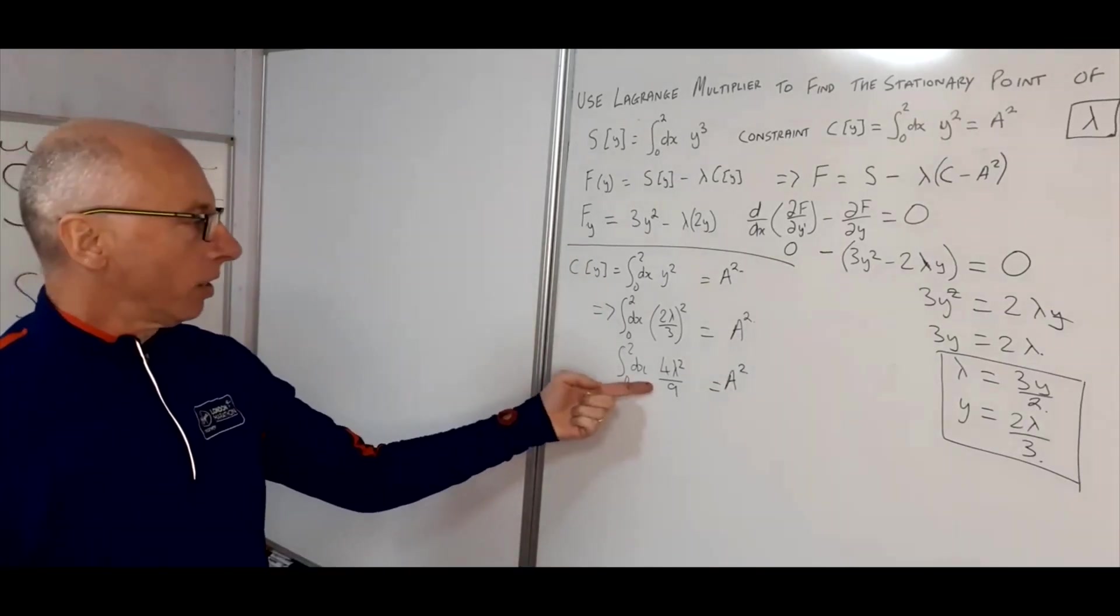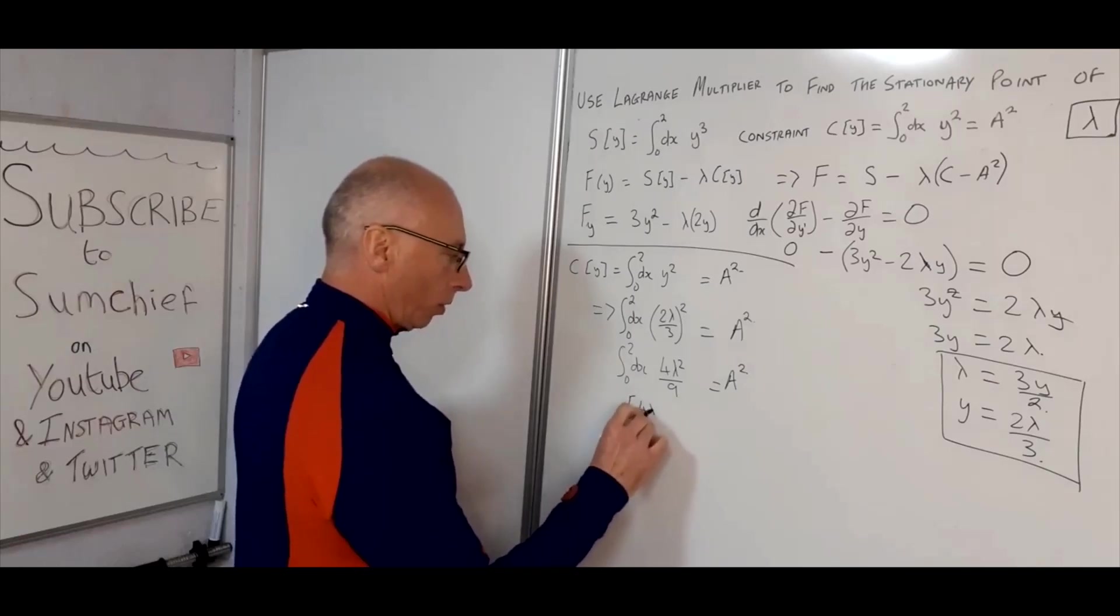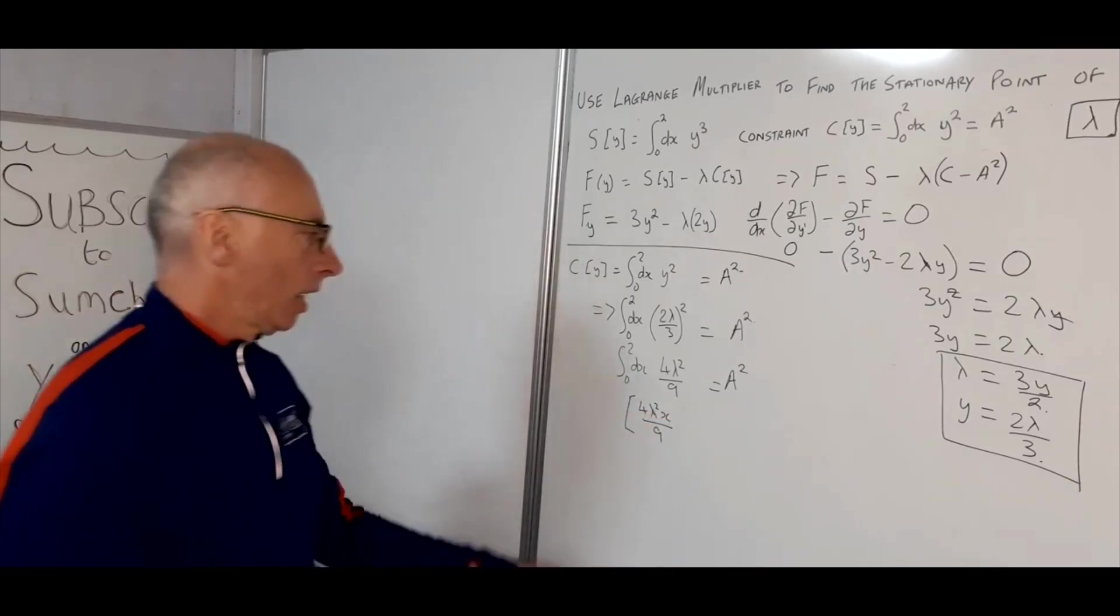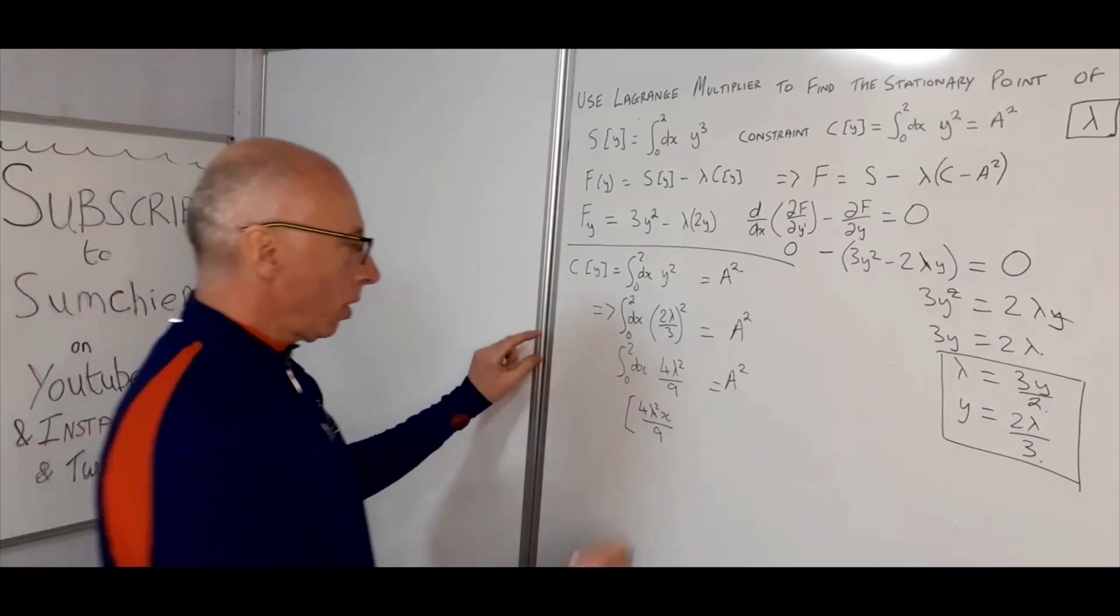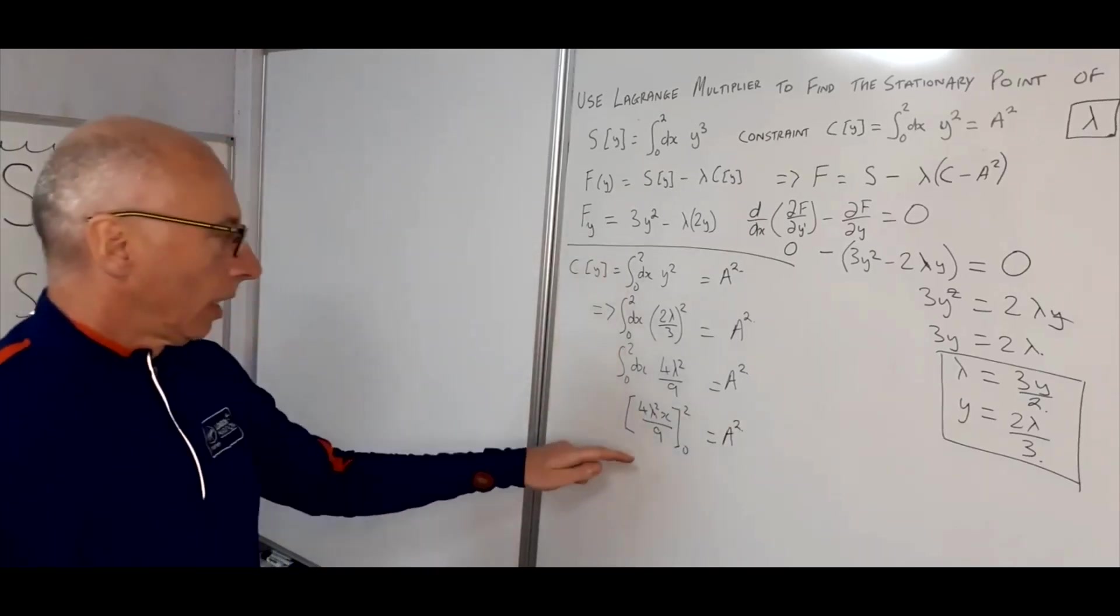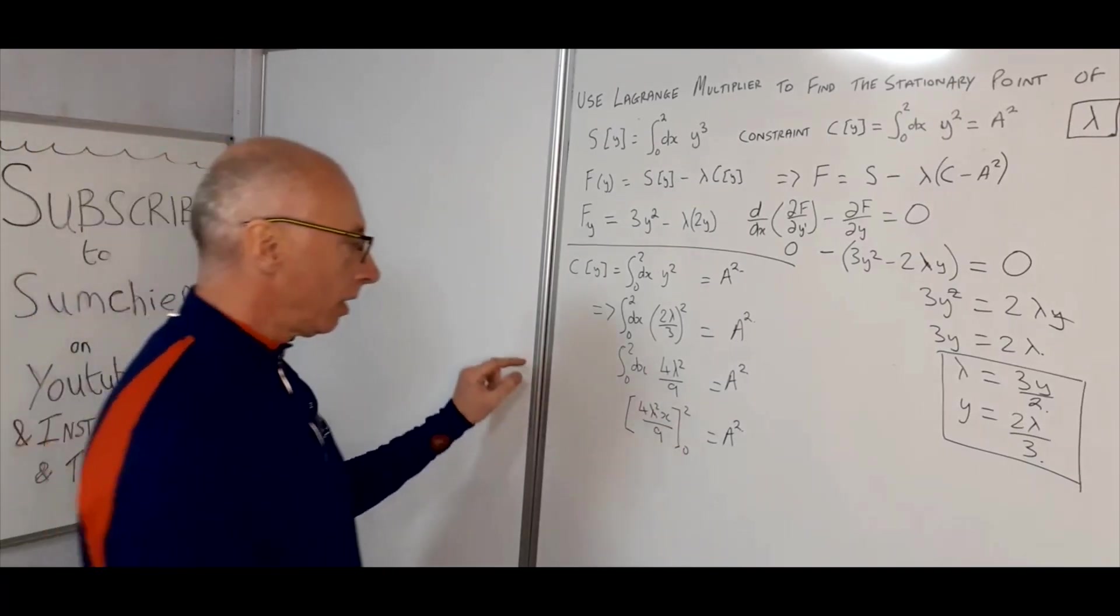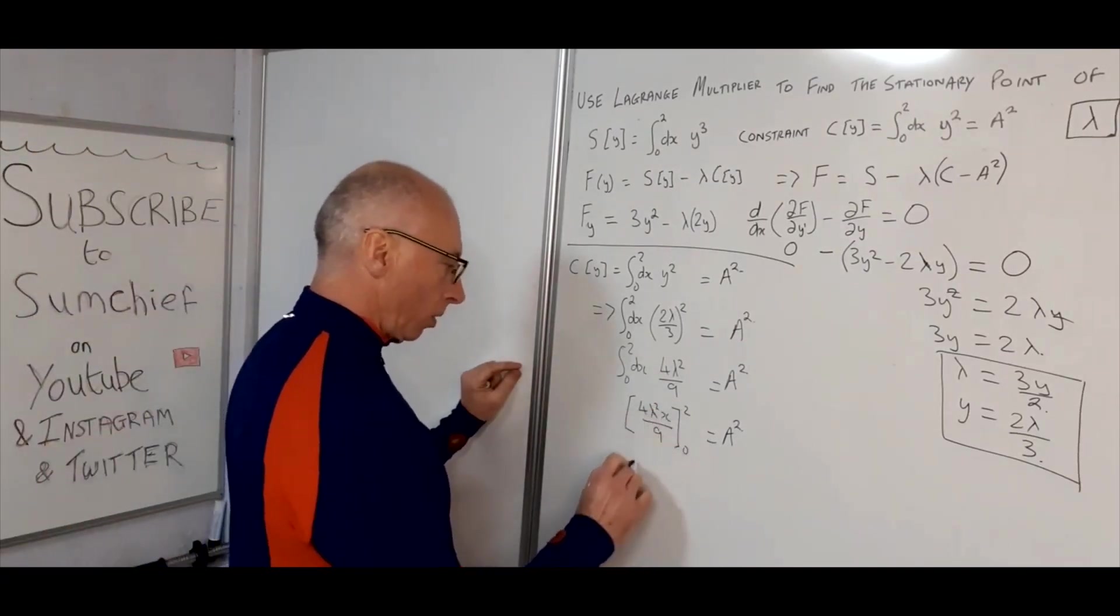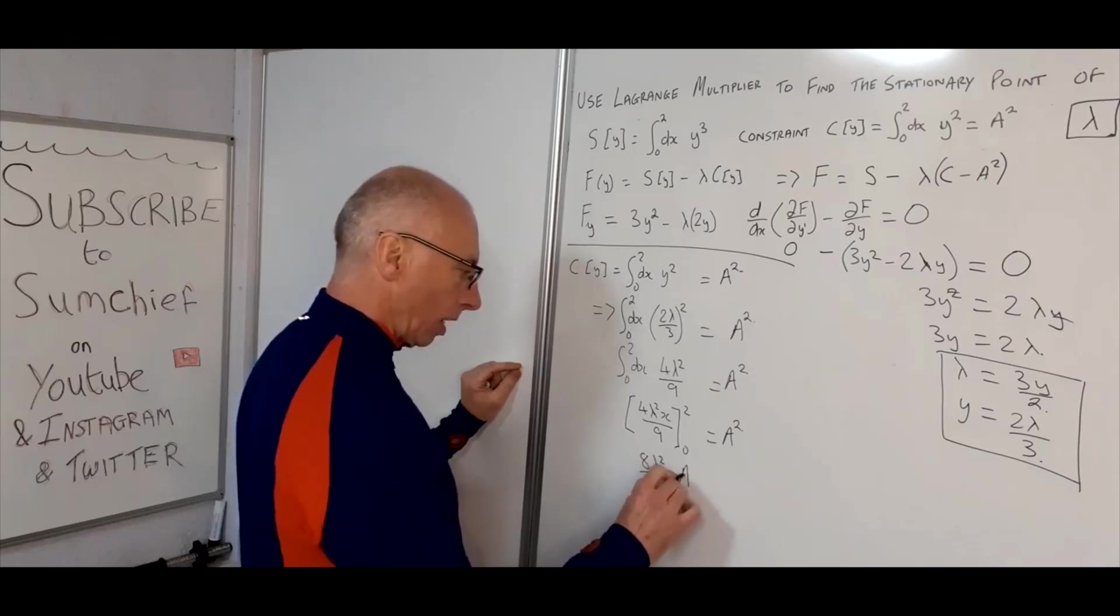So if we square all of this we're going to get 4 over 9 lambda squared. So that's 0 to 2 dx, 4 lambda squared over 9 equals A squared. Now we can integrate this with regards to X. That's going to just leave us with 4 lambda squared X over 9, and then we've got with regards from 0 to 2, and that equals A squared. To evaluate this, obviously when X is 0 it disappears, and when X is 2 we're going to have 8 lambda squared over 9. And that equals A squared.